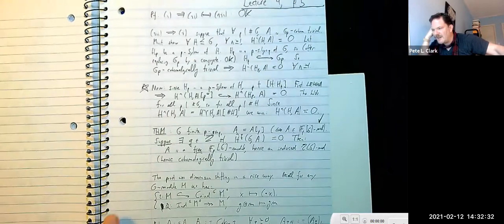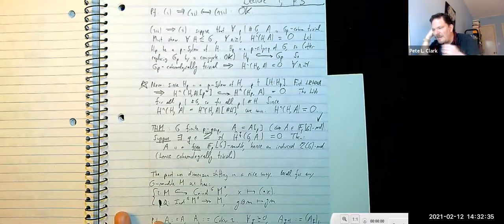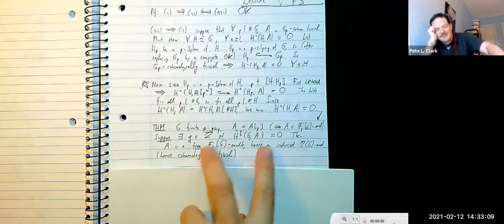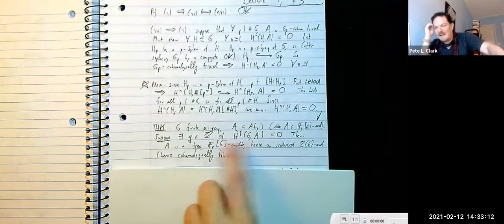Looking back at the statement, there's a hypothesis we haven't used yet — and the result is not true without it. What we haven't worked into the picture is that some cohomology group vanishes. Our next goal is to figure out how to use the fact that one of the Tate cohomology groups vanishes.